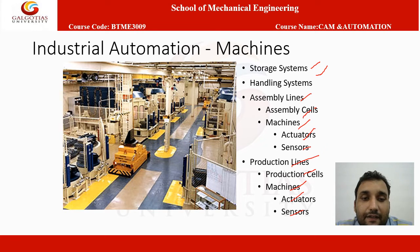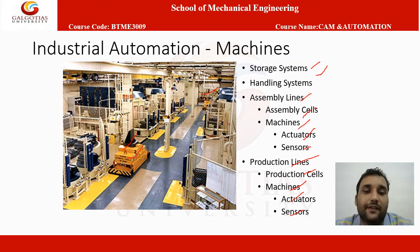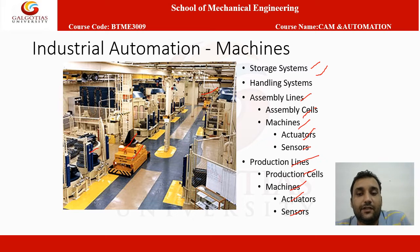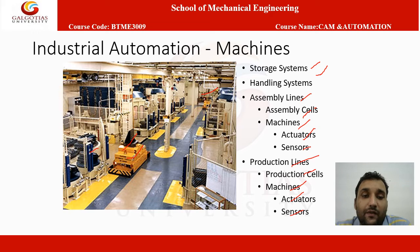As you can see in this image, this is a typical photograph of any automated industry. This is the handling system. This is the storage system. These are the assembly lines. In the assembly line, there are assembly cells and machines having actuators and sensors. These are the typical components of industrial automation.